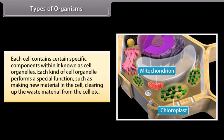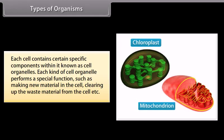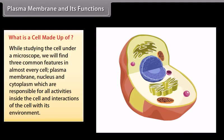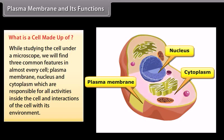Each kind of cell organelle performs a special function, such as making new material in the cell or clearing up waste material from the cell. While studying the cell under a microscope, we find three common features in almost every cell: plasma membrane, nucleus, and cytoplasm, which are responsible for all activities inside the cell and interactions of the cell with its environment.